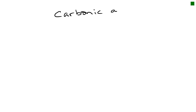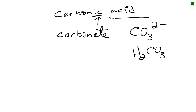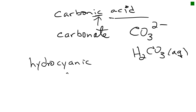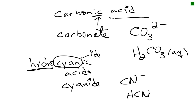If asked for the formula for carbonic acid: there's no hydro, so the -ic ending means it comes from an -ate anion — carbonate. We know carbonate is CO3 2-minus, so the acid is H2CO3 aqueous. For hydrocyanic acid: hydro tells us the anion ends in -ide, so we find cyanide, which is CN-minus. Hydrocyanic acid is therefore HCN.